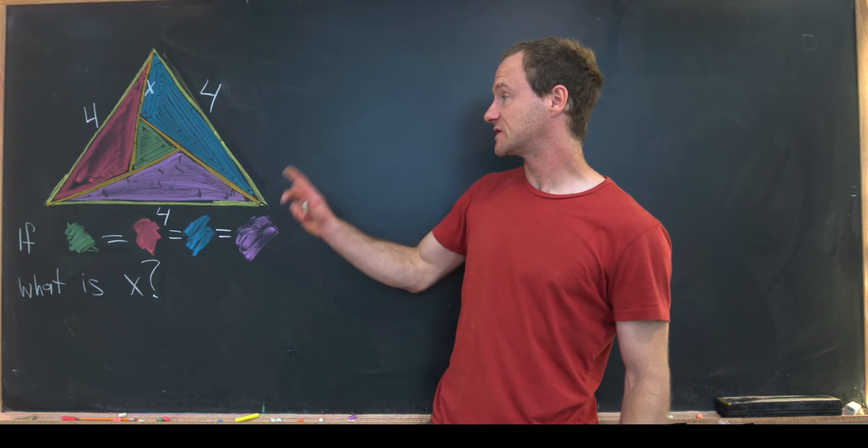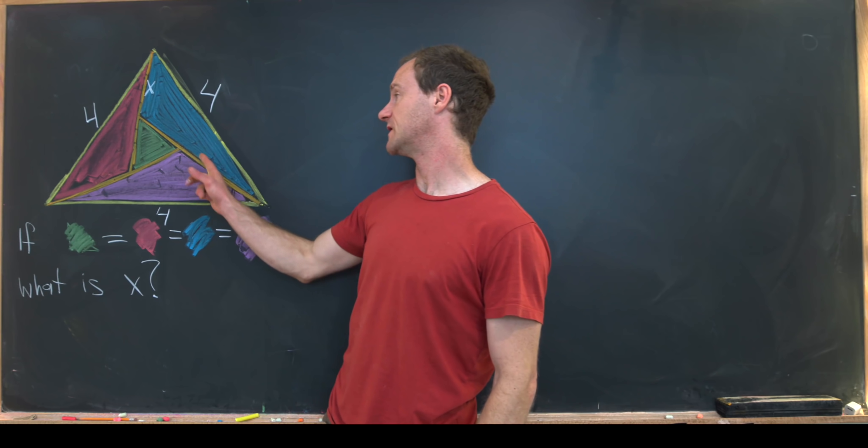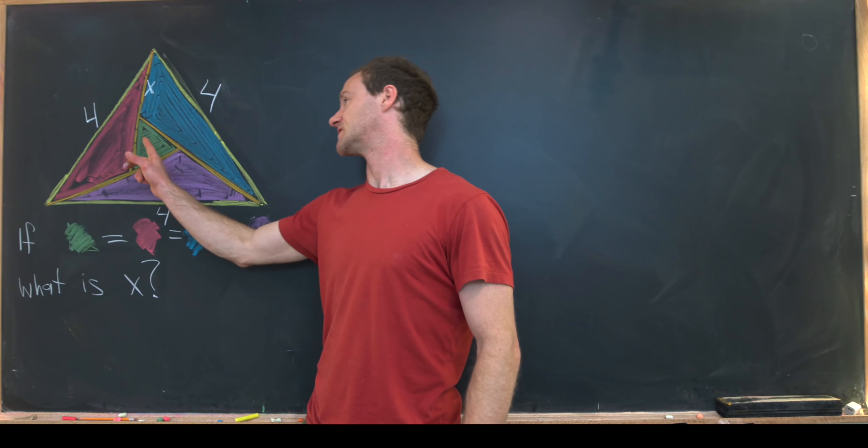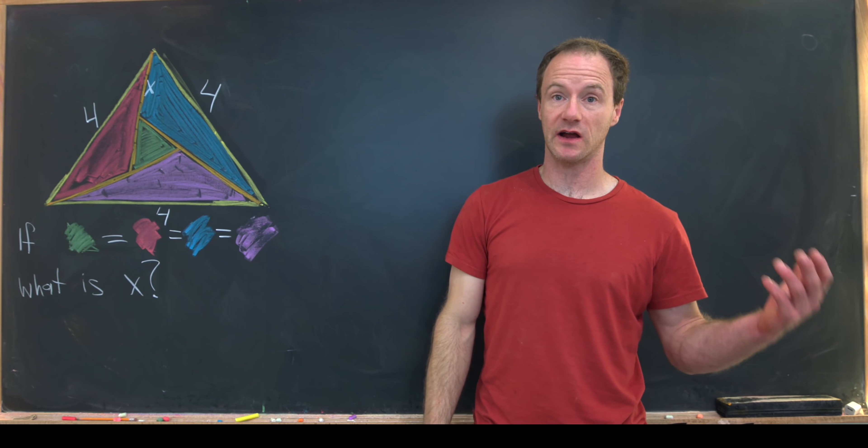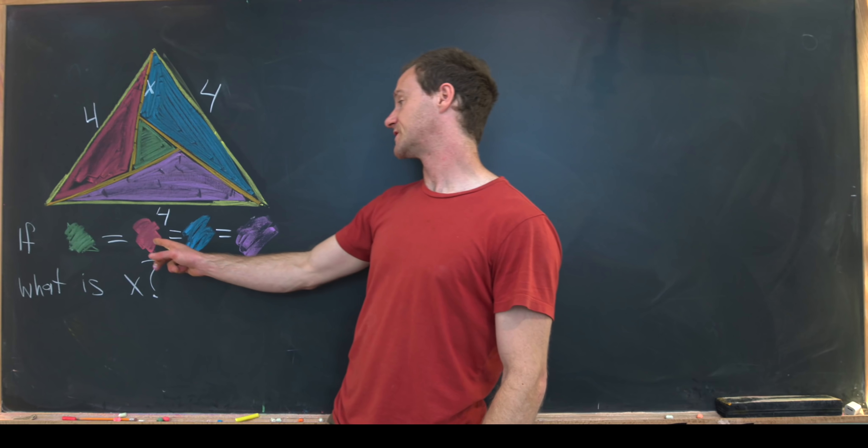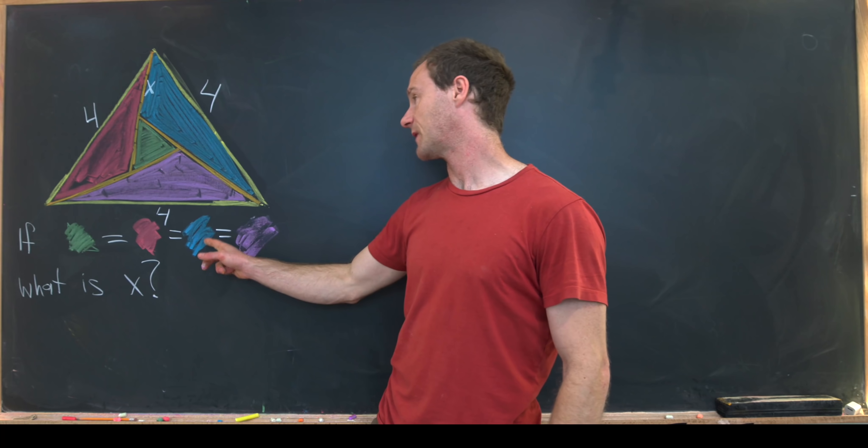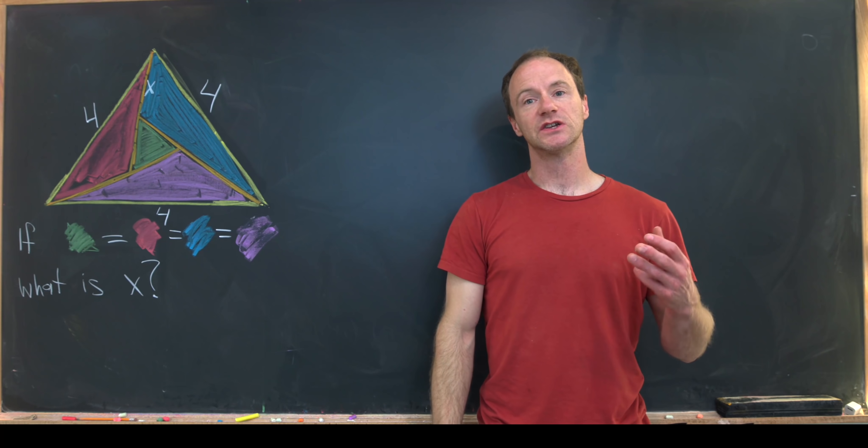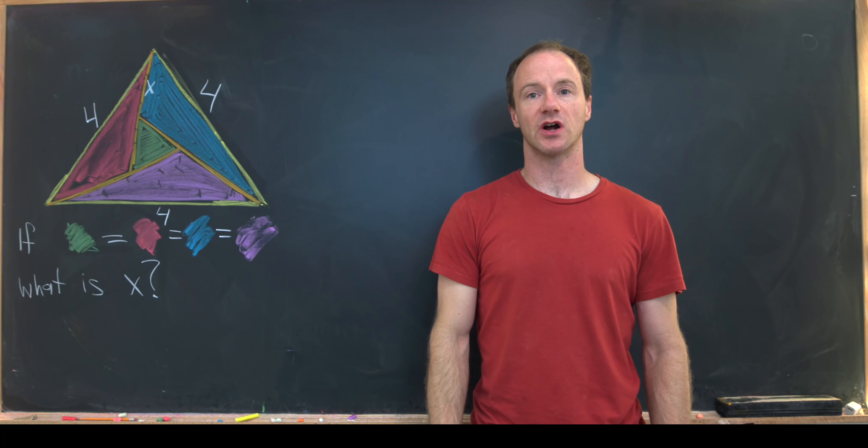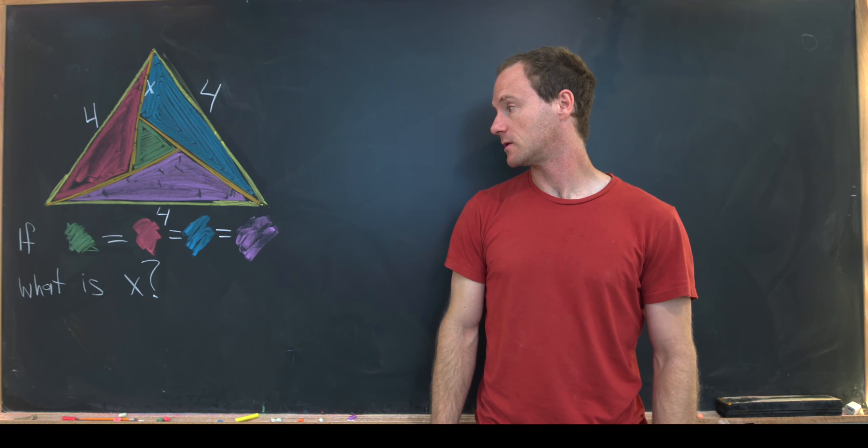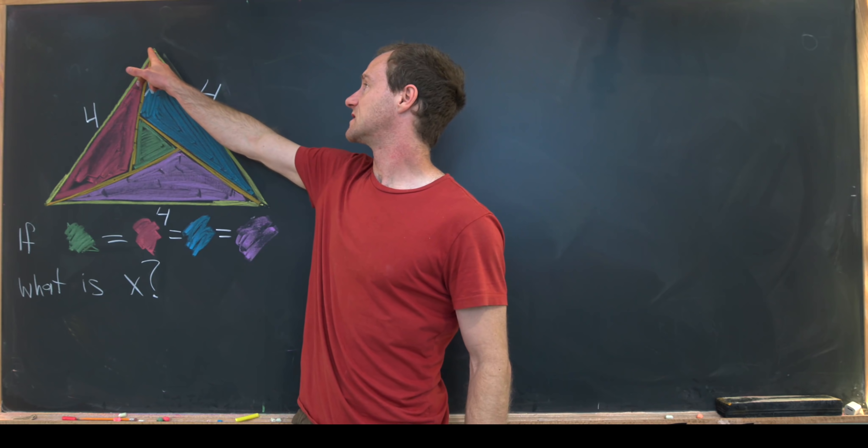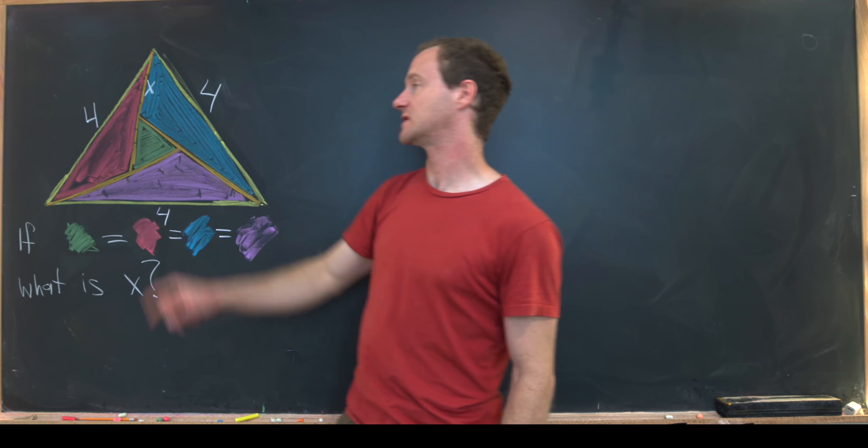And they intersect in a way so that all of these four sub-triangles have the same area. So the area of this green equilateral triangle in the middle is equal to the area of this red triangle and the area of this blue triangle and the area of the purple triangle. So we have four equal area triangles building up this other triangle. And our goal is to find x where x is the length of this line segment from this vertex here to this vertex here.